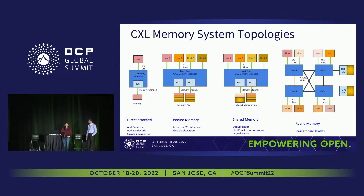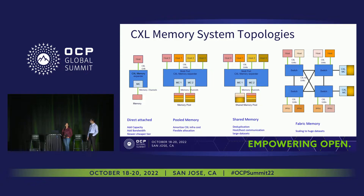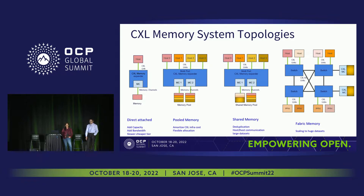Here is the CXL memory system topologies. We have gone through this multiple times in today's session — that's directly attached, portal memory, shared memory, and fabric memory. We will target direct attached memory, where you have capacity added so you can feed an entire database into the memory.